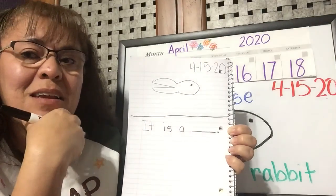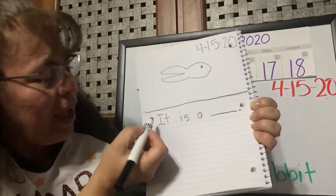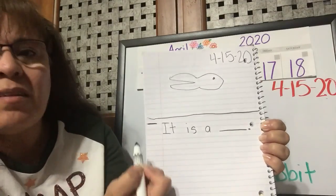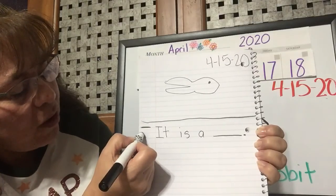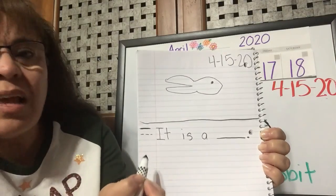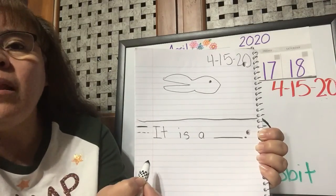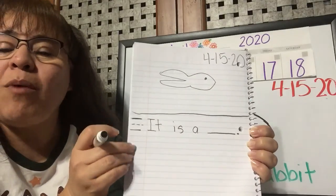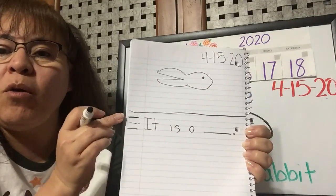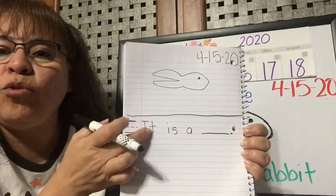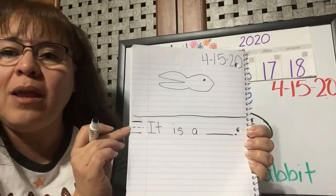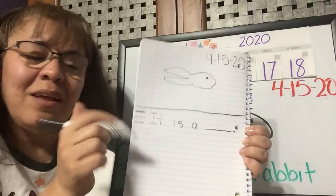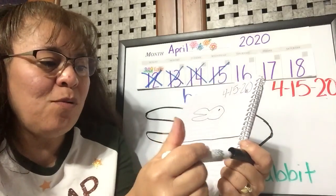Don't forget, when we are writing in our notebook we can use two spaces — the top space and the middle line where our lowercase letters start, and then the bottom line. So when writing in our notebook, we still use those two spaces just like we do on our handwriting paper.